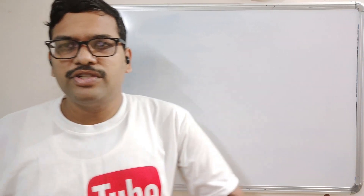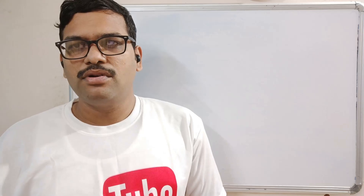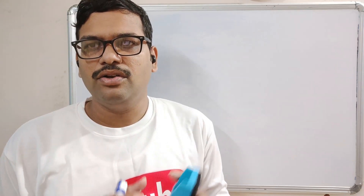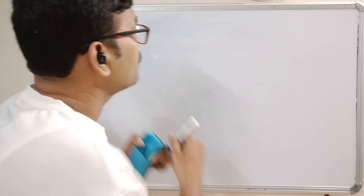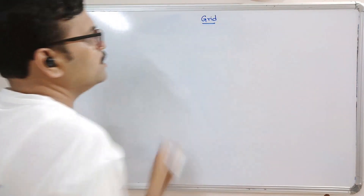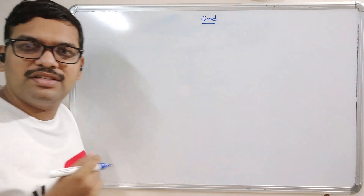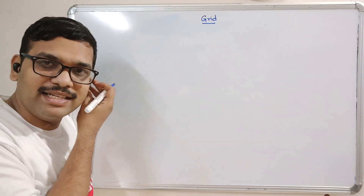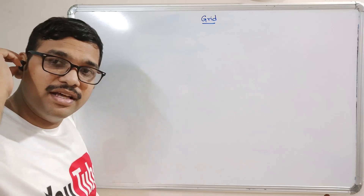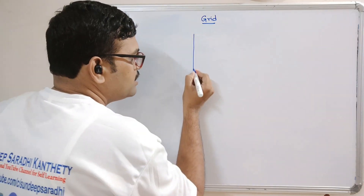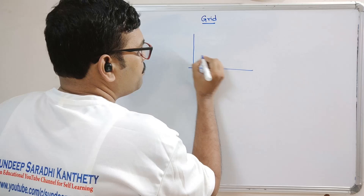Hello friends, welcome back to our channel. In today's session we'll discuss about grid lines — applying the grid function on the chart. This grid function will give lines on both the x-axis and y-axis, so the chart will have grid lines. For example, if our chart is like this, there is a point.